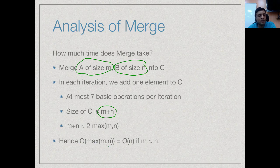If m is roughly the same as n — which is typically the case in merge sort since we split in half and the two halves differ in length by at most one — then merging is a linear time operation. So merging two lists takes time proportional to the combined length of those two lists.